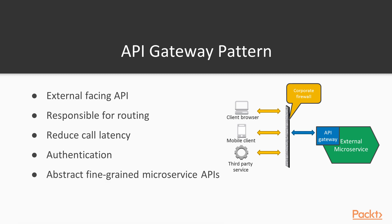Finally, the API gateway acts as an abstraction to finer-grained microservice APIs, effectively providing a proxy so that the underlying services can be changed without affecting any external services.